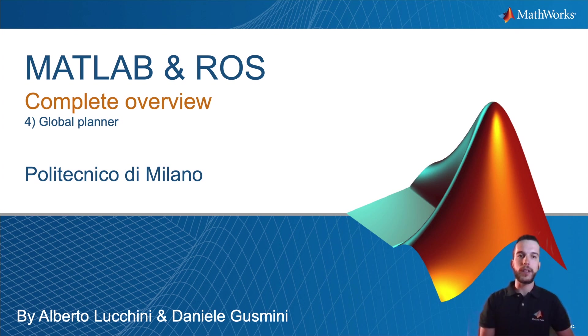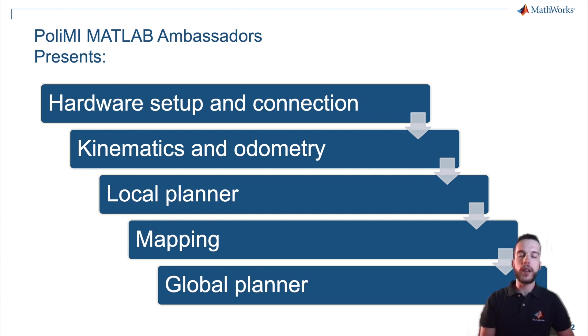Welcome everybody to this final presentation about MATLAB and ROS. Today we will see how to introduce a global planner in our robot. We have seen through this week different steps to configure our robot to be completely autonomous, starting from hardware setup and connection, the study of kinematics and odometry, the local planner and mapping that we saw in the last video with Alberto. And now we'll see how to plan our path in order to be followed, the global planner.